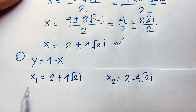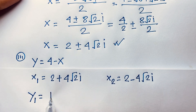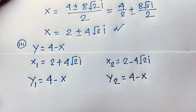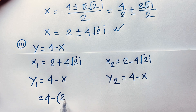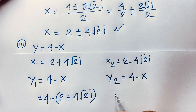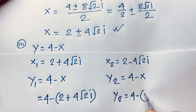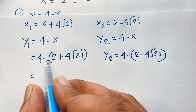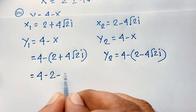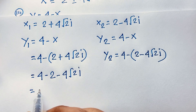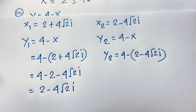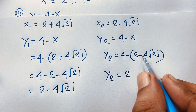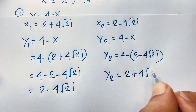Our target is to find y. Since y equals 4 minus x, y1 equals 4 minus (2 plus 4 square root 2 i), which gives 2 minus 4 square root 2 i. And y2 equals 4 minus (2 minus 4 square root 2 i) — here the minus times minus becomes plus — so y2 equals 2 plus 4 square root 2 i.